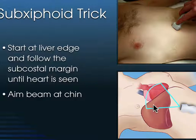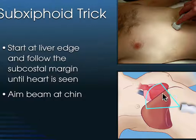The sub-xiphoid view has limitations. If we inadvertently aim the beam towards the patient's left, then we wouldn't have the liver anymore and we wouldn't be able to see the heart at all — it would be shining the sound right up into the chest. So in patients who have really small livers, this sub-xiphoid view is not a very good window. The larger the liver, the better this window is.